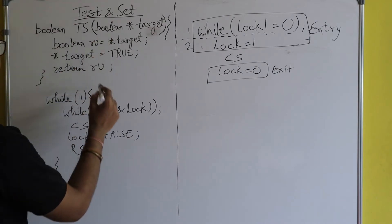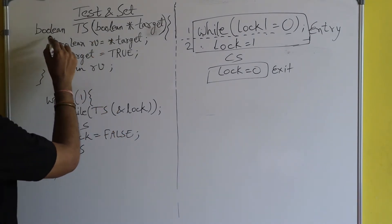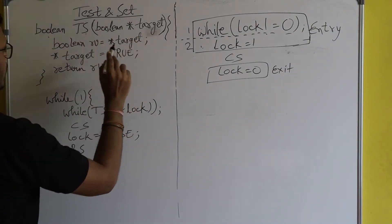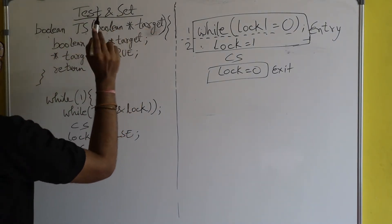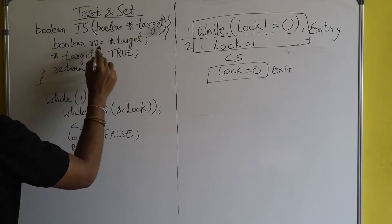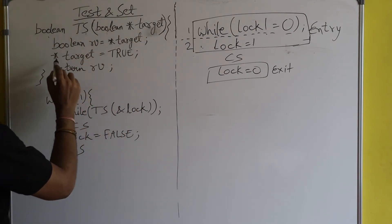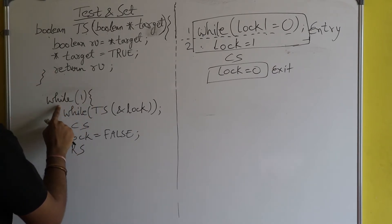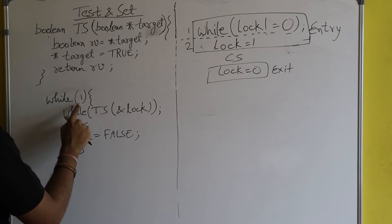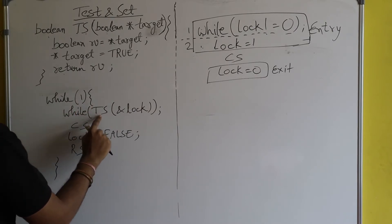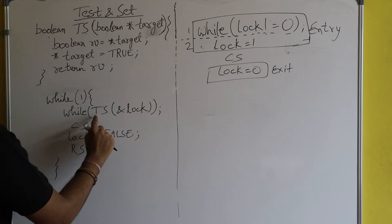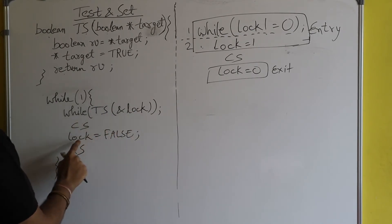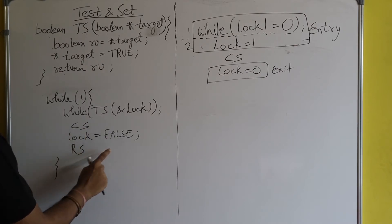The code is written as: boolean TS (test-set), with parameter boolean *target. Inside, boolean rv = *target; *target = true; return rv. Then the while loop is written as: while (TS(&lock)); followed by the critical section, then lock = false, and the remainder section.